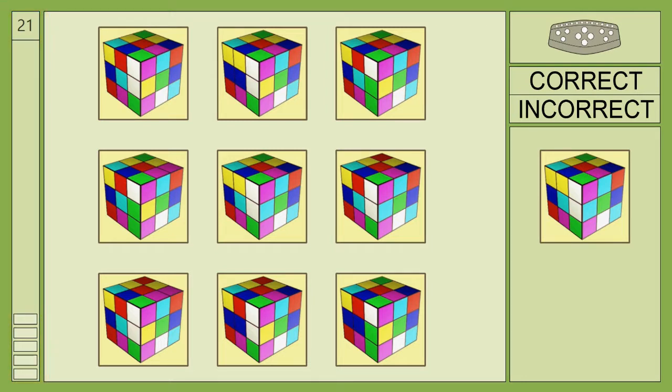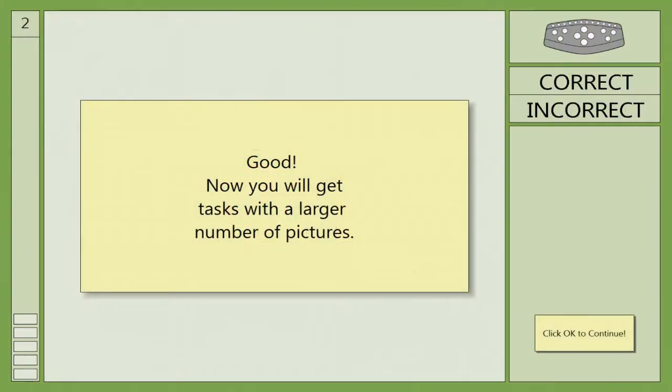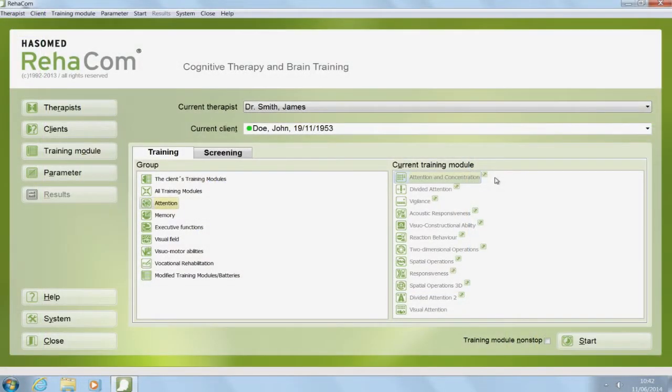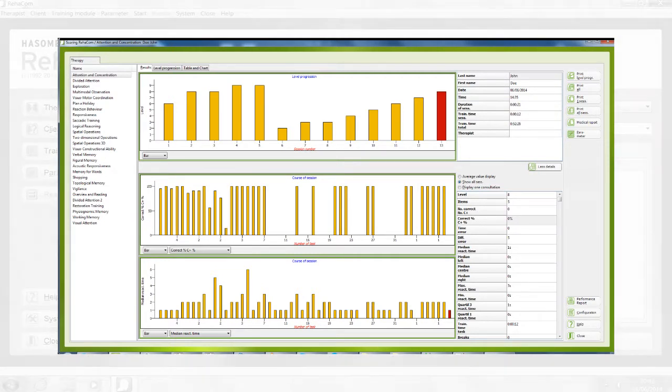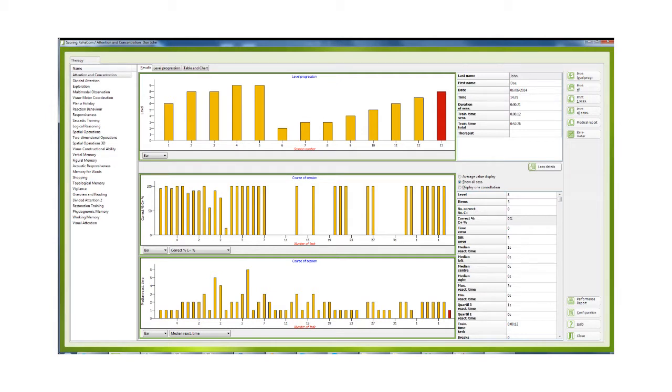At the end of a training session, Rehacom will create an evaluation graph. Training results will always be saved automatically, and the patient will then continue from this stage when starting the next training session.